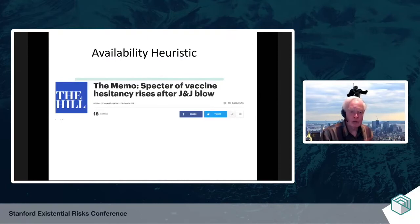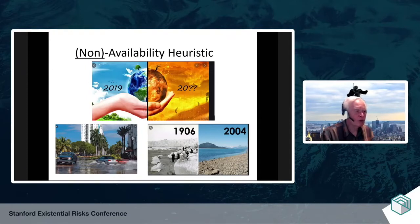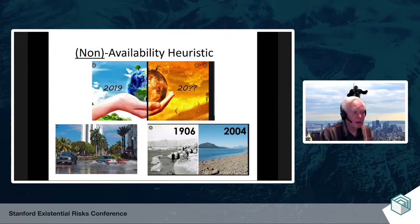Finally, the flip side is what might be called the non-availability heuristic. Most people's reaction to climate change is that there is no one event as dramatically connected to climate change as somebody getting a blood clot after a vaccine. Sea levels may rise in Miami, glaciers may melt, but in the absence of being able to attribute events to climate change in your mind, it's the non-availability that makes people pretty slow to deal with climate change issues.